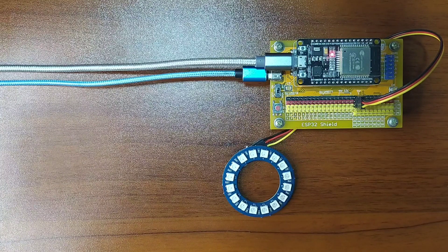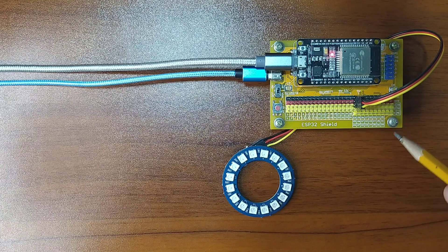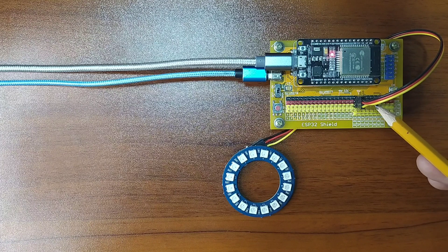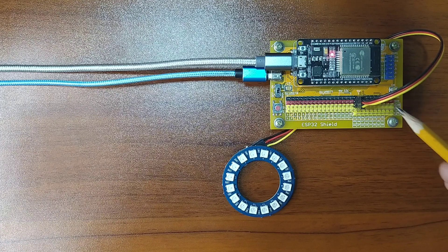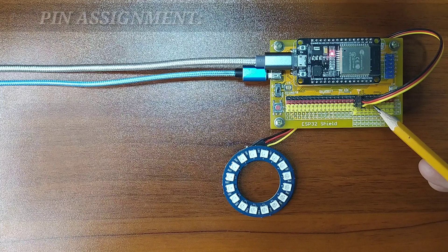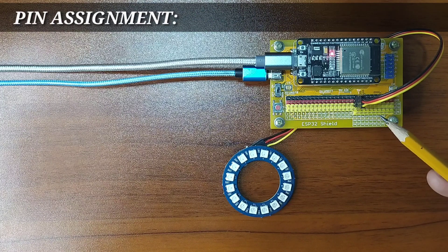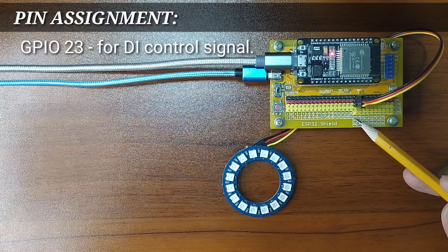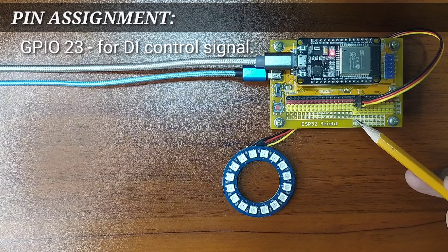Next, attach the other side of the Dupont jumper wires to the ESP32 shield by matching the colors of the wires to the colors of the pin headers — black to black, red to red, and yellow to yellow. For this experiment, I chose pin 23 for the control signal of the NeoPixel.